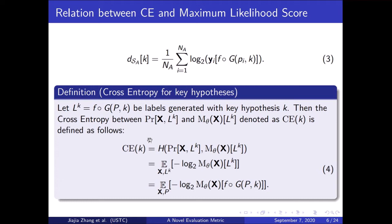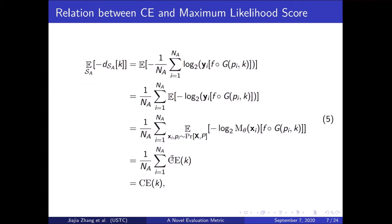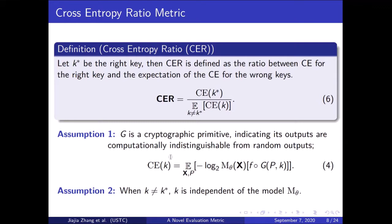Notice that we expand the definition of cross entropy to all possible key hypotheses. There is a tight relation between the maximum likelihood score and the cross entropy for key hypotheses. Thanks to the law of large numbers, the expectation of the negative maximum likelihood score equals the cross entropy for the corresponding key hypothesis. That is why we redefine cross entropy. With this relation, we can define a new metric from the perspective of side-channel analysis. By considering both the cross entropy of the right key and the wrong keys, which have a direct relation with their maximum likelihood scores, we define a novel metric called cross-entropy ratio.